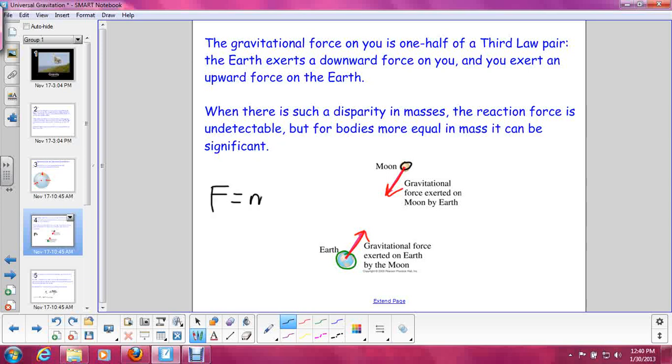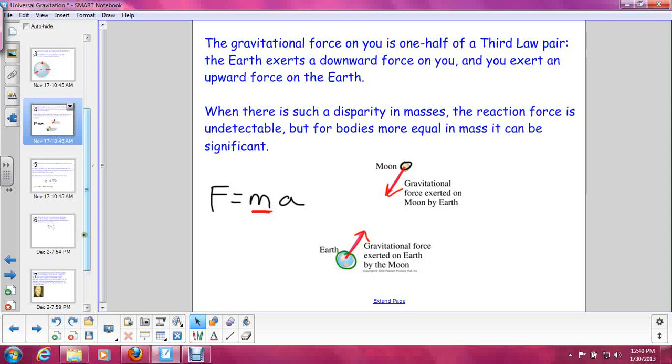The reason why we are not in orbit around the moon is because of Newton's second law. Force equals mass times acceleration. The amount of force on the moon and the Earth are exactly the same. But the masses are very different. If we have a really large mass, we know it's not going to accelerate very much for a given force. But if you have the same amount of force on a much smaller mass, it will accelerate much more. And that's why the moon orbits us and we do not orbit the moon.